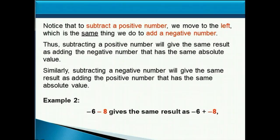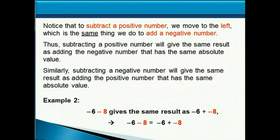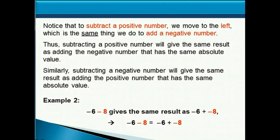Negative six minus eight gives the same result as negative six plus negative eight. So here you can think of it as: I have six negatives and I add eight more negatives to that, and that will give me 14 negatives altogether. So negative six minus eight equals negative 14.